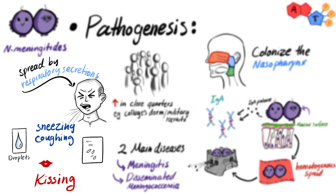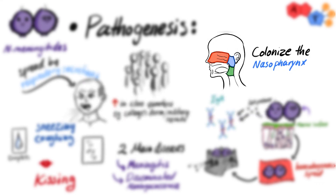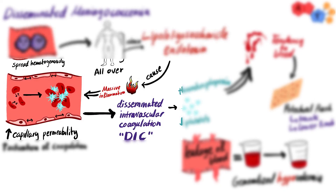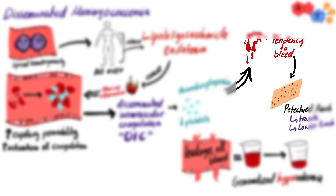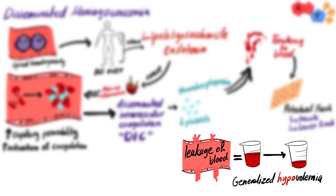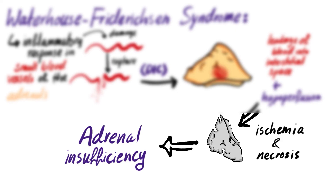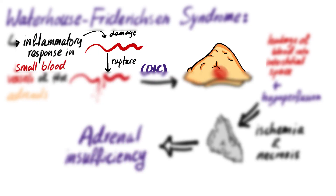Quick recap: Neisseria meningitidis infects through respiratory secretions, colonizes the nasopharynx, then disseminates hematogenously, releasing the endotoxin lipo-oligosaccharide, which causes massive inflammation. This leads to increased capillary permeability and DIC, consuming platelets causing thrombocytopenia and petechial rash, plus blood leakage causing hypovolemic shock. When this results in ischemia and necrosis of the adrenal gland, we have acute adrenal insufficiency — Waterhouse-Friderichsen syndrome.